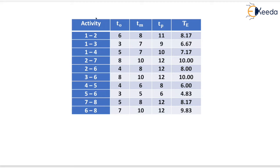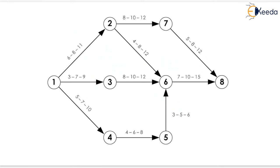Now the activity T0, TM, and TP are already given in the question. We have computed the activity time, that is TEIJ. For activity 1-2 it will be equals to 8.17, similarly for 1-3 it will be equal to 6.67, and similarly for 6-8 it will be 9.83. Now we will mark all the activity time on the diagram — we have marked all the activity durations in red pen.